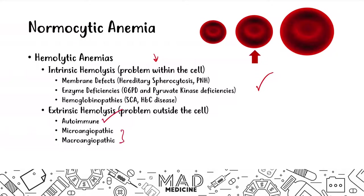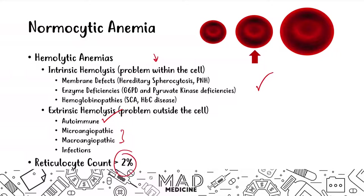We've already covered autoimmune hemolytic anemia in a previous video — check that out in the playlist. One key thing to understand is the reticulocyte count is going to be raised, greater than 2%, because hemolysis is occurring. Your body realizes it doesn't have enough red blood cells, ramps up production, and immature red blood cells get released from the bone marrow, leading to an increased reticulocyte count.